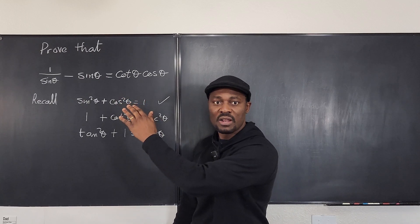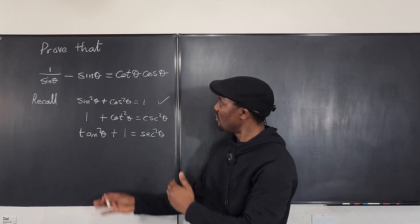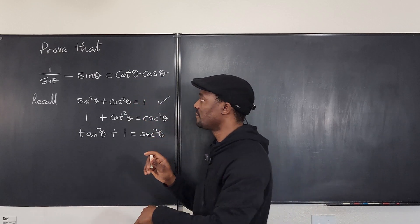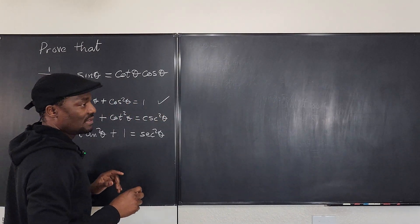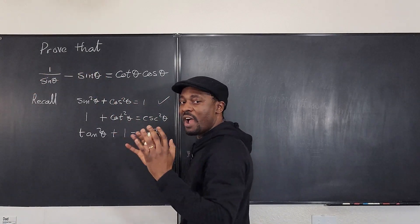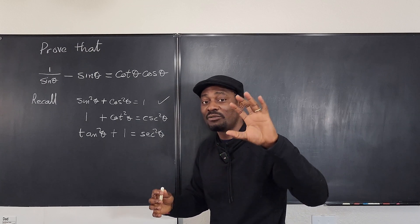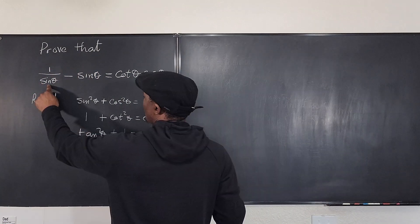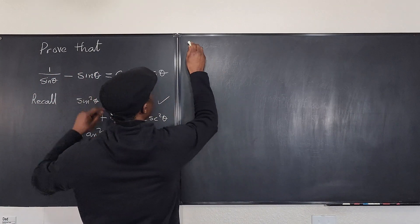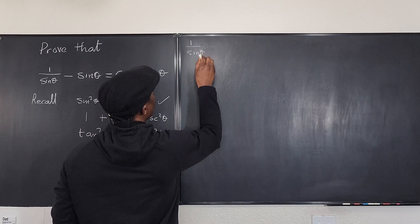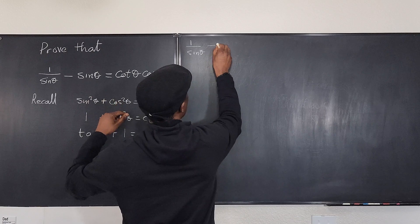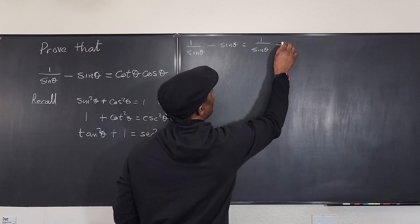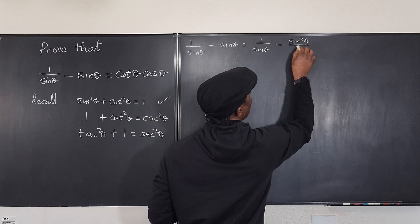Now let me start by going from left to right. I'm going to use one of these identities because I'm going from addition or subtraction to multiplication. So starting with 1/sinθ − sinθ, I want to combine both terms into a single expression. I multiply the second term top and bottom by sinθ, giving me 1/sinθ minus sin²θ/sinθ — so they have the same denominator.